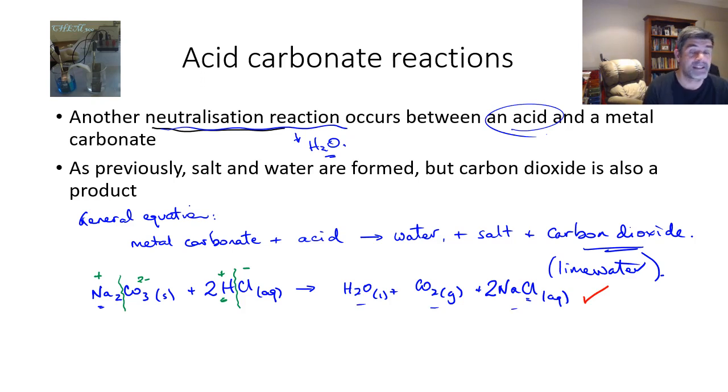This is an example of an acid carbonate reaction. You'll notice that it is a form of neutralization because, again, we are producing salt and water. The difference this time is we get carbon dioxide gas as an additional product. And that carbon dioxide is given off, and as I said, we can bubble that through lime water, which is calcium hydroxide, and form the precipitate calcium carbonate, which is insoluble and therefore forms a suspension, a white suspension, and that's what makes the lime water look cloudy.